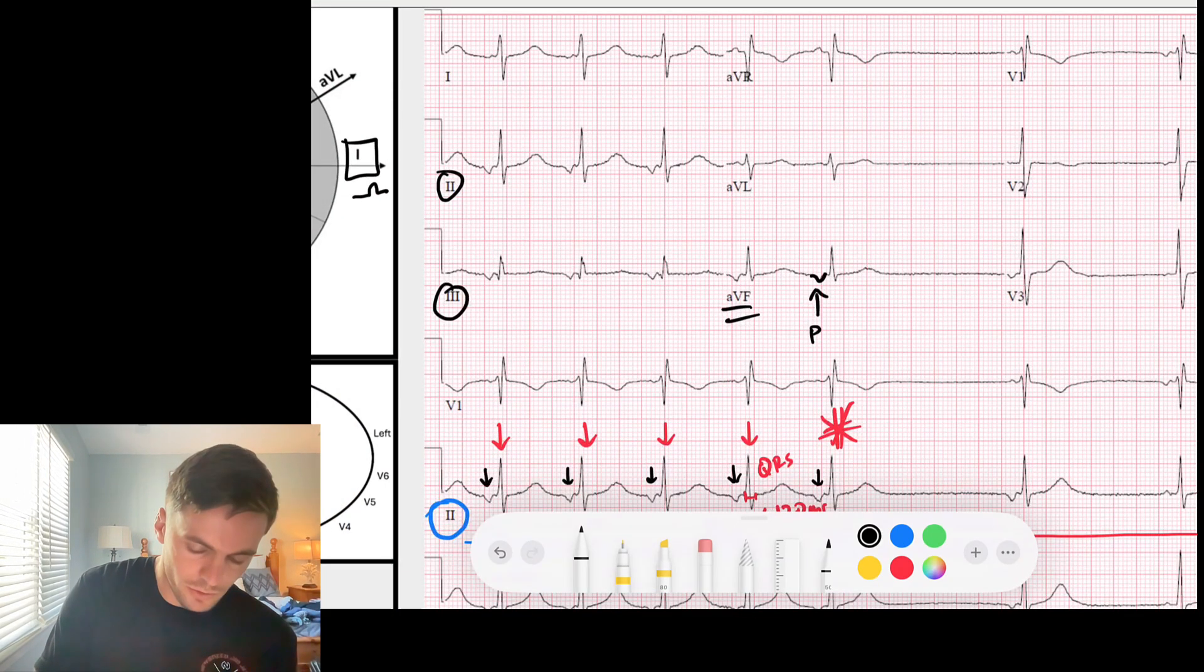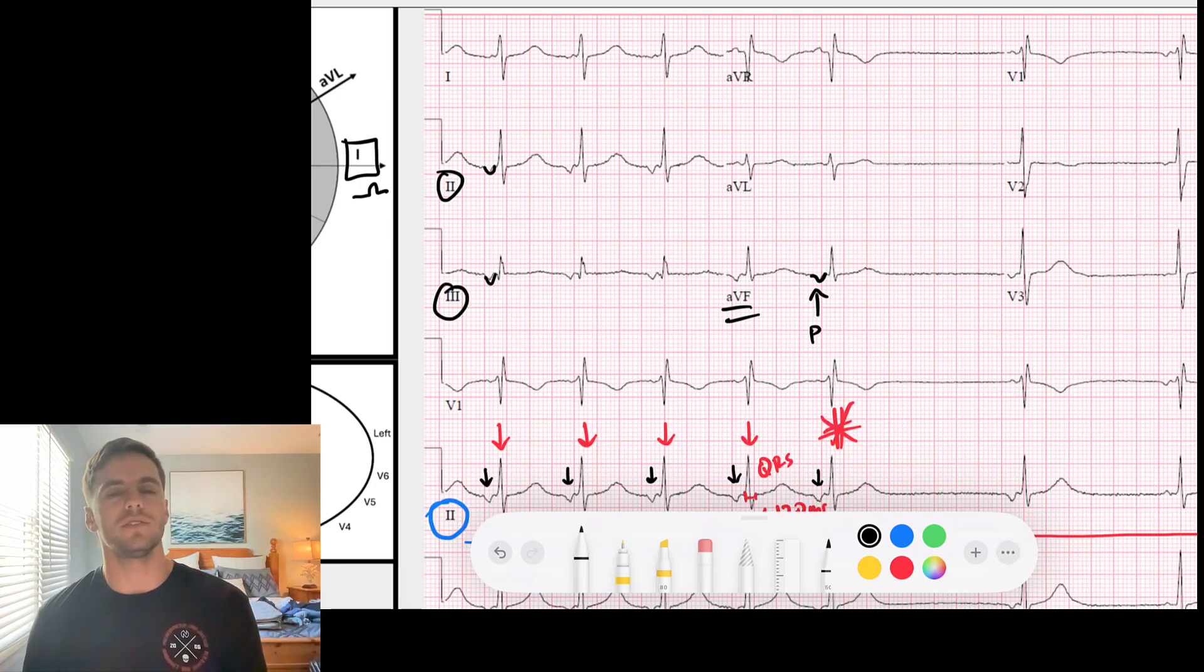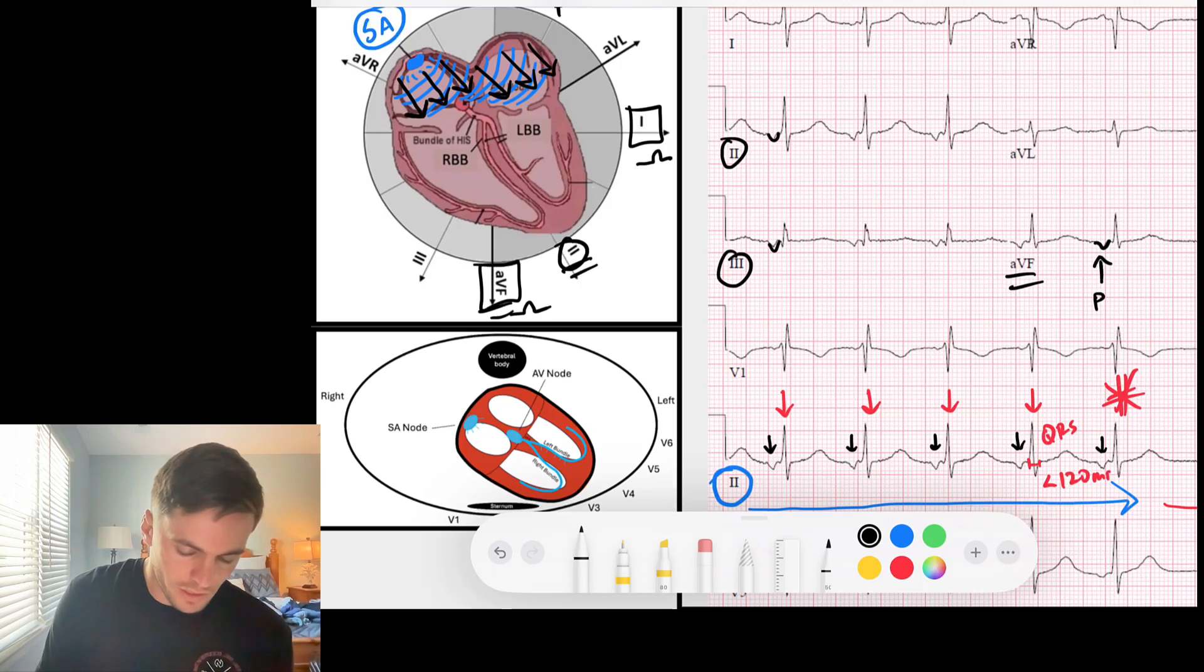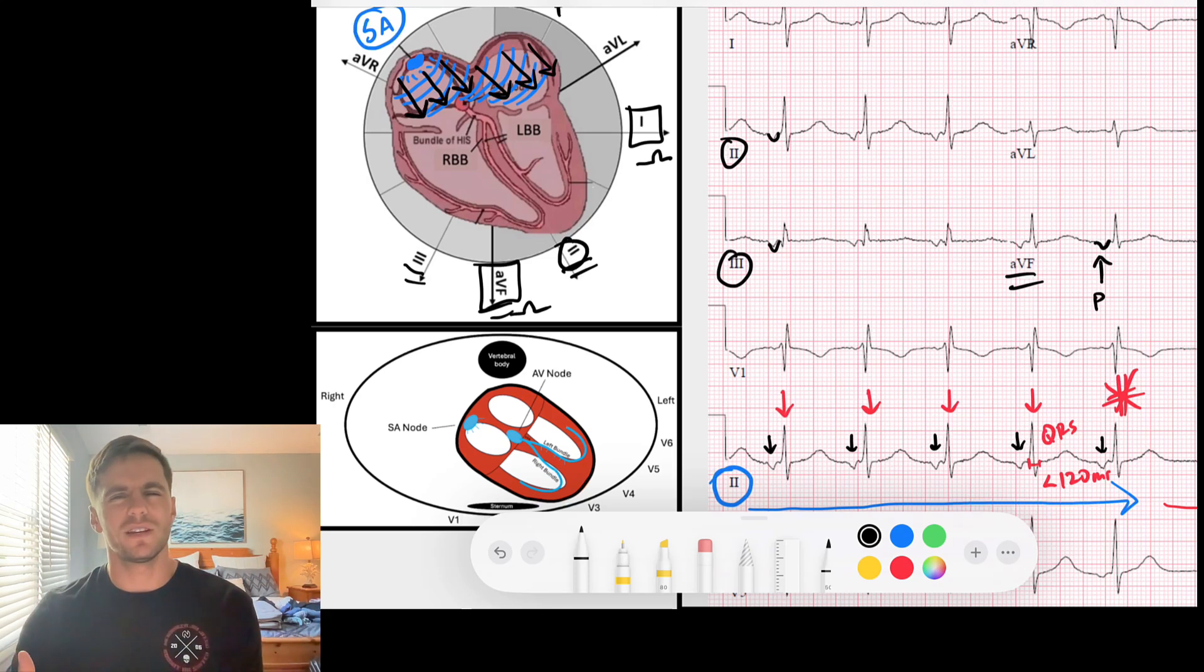And those P waves, I want to make sure that they are of sinus origin. So I look up at lead one and lead AVF, and what I initially notice is that look at lead AVF—look at the P wave here, look at that P wave in AVF, it's inverted. And look at the P wave here in lead three and lead two—they're inverted. So these are negative P waves in the inferior leads, right? Leads two, three, and AVF are inverted. So when P waves are inverted, that means they're going away from those leads.